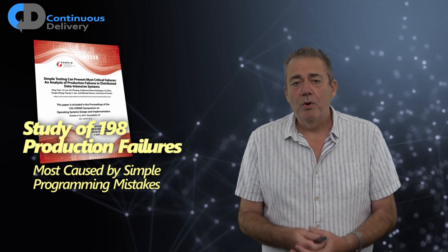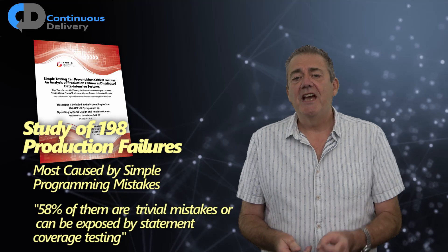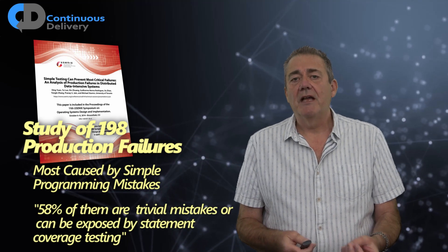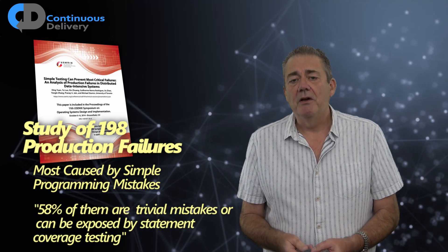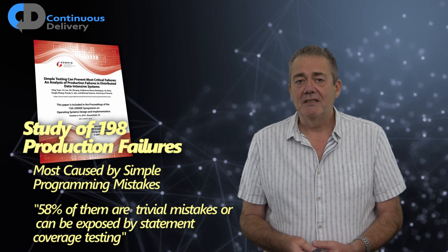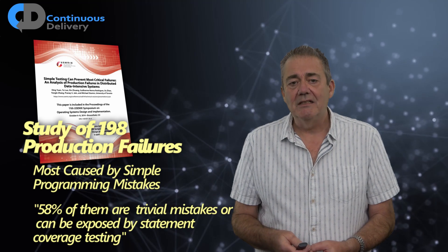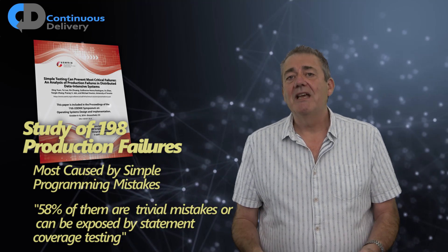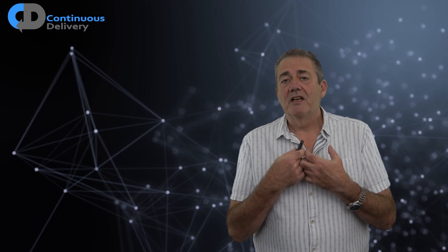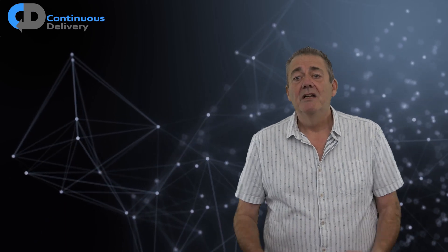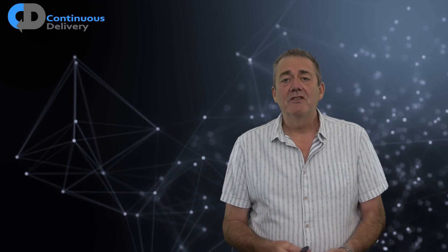To quote the report that they produced, they found 58% of these mistakes are trivial and can be exposed by statement coverage testing. If we simply checked that our code did what we thought it did, we'd eliminate nearly 60% of production defects. That's a huge step forward. Actually, if you take this idea really seriously and start applying test-driven development in its broadest sense, in the continuous delivery sense that I tend to talk about, the data, the empirical data, is even stronger than that.